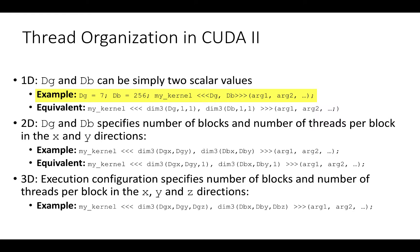A one dimensional grid can also be seen as a three dimensional grid. A 3D grid can be defined by using the CUDA dim3 type with only one grid point in the y and z directions. So we can also use the equivalent form using dim3 in the execution configuration.